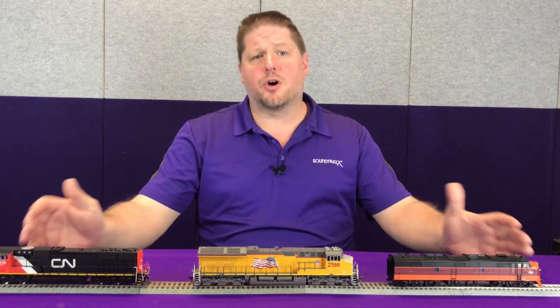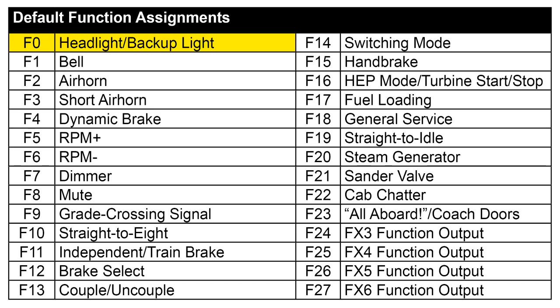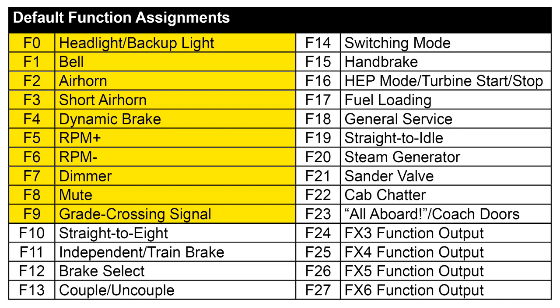When doing this, we have to look at our locomotives and determine what functions we want active on each one based on its position in the consist. For the lead locomotive, we want F0 for the headlight, F1 for the bell, F2 for the horn, and F3 for the short horn. Because this is a consist, we also want F4 for the dynamic brakes, F5 and F6 for RPM plus and minus so we can override the DDE. F7 will dim the headlight when meeting oncoming traffic, F8 is the mute, and F9 is the grade crossing horn — we want the horn on our lead unit so we'll enable that as well.